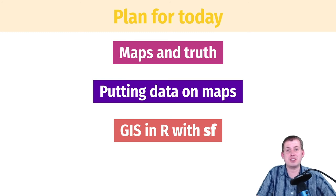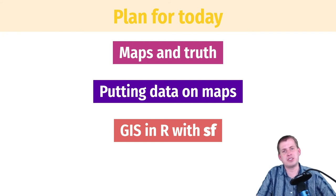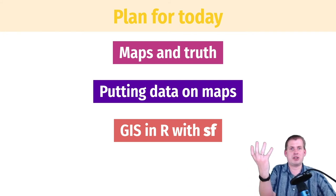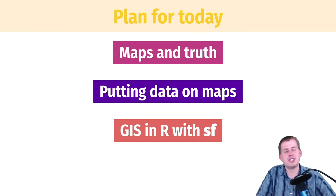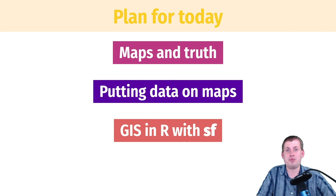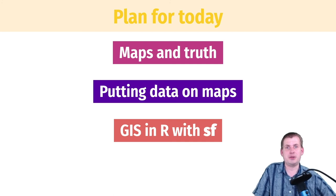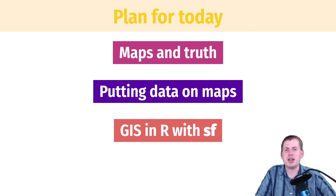Nowadays there's a package called sf, which stands for simple features. 'Features' is a term from geography that refers to geographic shapes like lines, areas, points, and things like that. With the sf package it is incredibly easy to make maps — it's like two lines of code. I'll show some examples of how to do that.